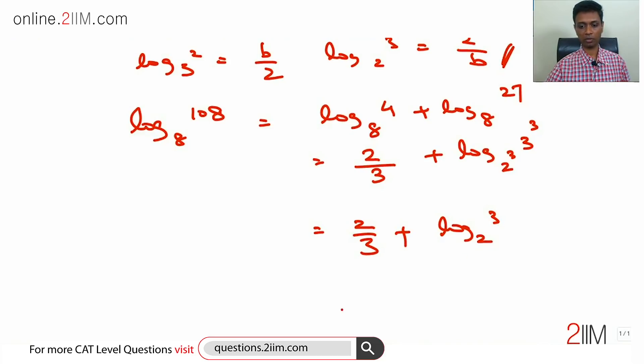That we have done. So this is 2 by 3 plus 2 by b, LCM is 3b, the numerator would be 2b plus 6. So we're looking for 2b plus 6 by 3b.